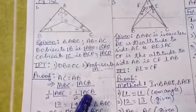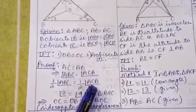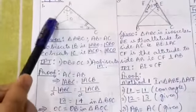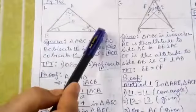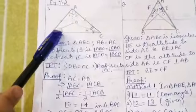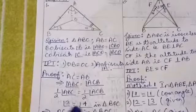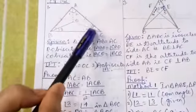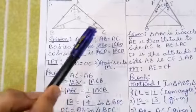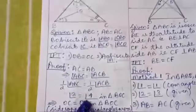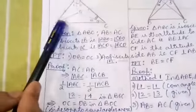Now, halves of equals are also equal. So half of angle ABC equals half of angle ACB. Since angle ABC is bisected, half of angle ABC is angle 3. And since angle ACB is also bisected, half of angle ACB is angle 4. So we get a new result: angle 3 equals angle 4.